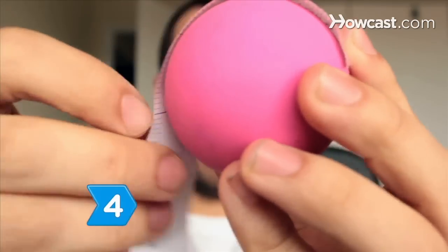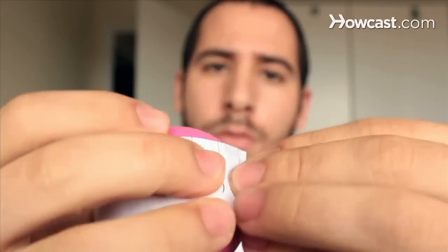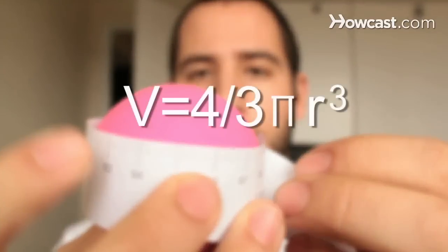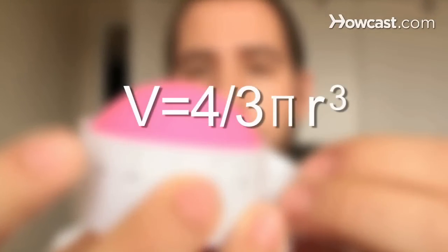Step 4. Measure the radius of a sphere, then calculate the volume by multiplying 4-thirds times pi times the cube of the radius.